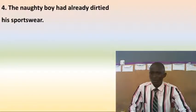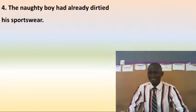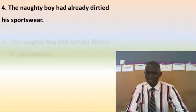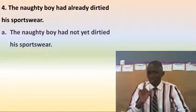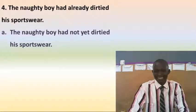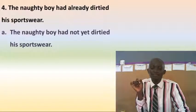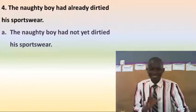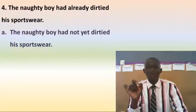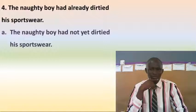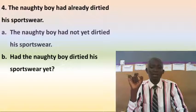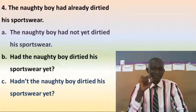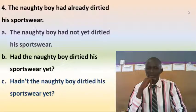Number four: 'The naughty boy had already dotted his sports wear.' This is past perfect, so the answer is: 'The naughty boy had not yet dotted his sports wear.' The key interest is on using the words 'yet' and 'already.' In interrogative form: 'Had the naughty boy dotted his sports wear yet?' And in a negative question: 'Hadn't the naughty boy dotted his sports wear yet?'